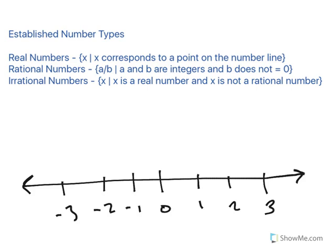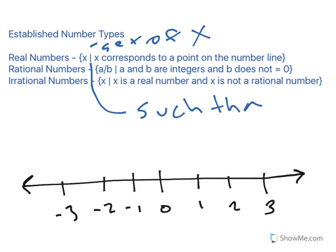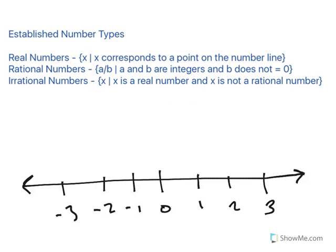The three other established number types are real numbers. As you can see, this set notation here, we have x. So basically what this means is a set of all x such that x corresponds to a point on the number line. This just means set of x, and this little vertical dash means such that.